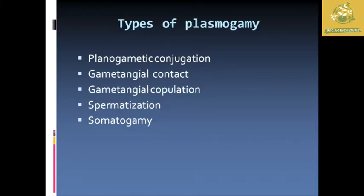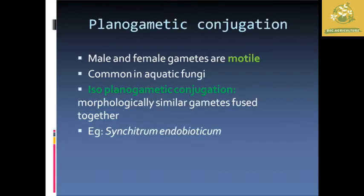Now we are going to see about the types of Plasmogamy. These include: planogametic copulation, gametangial contact, gametangial copulation, spermatization, and somatogamy. We will now look at each of these types of Plasmogamy in detail.